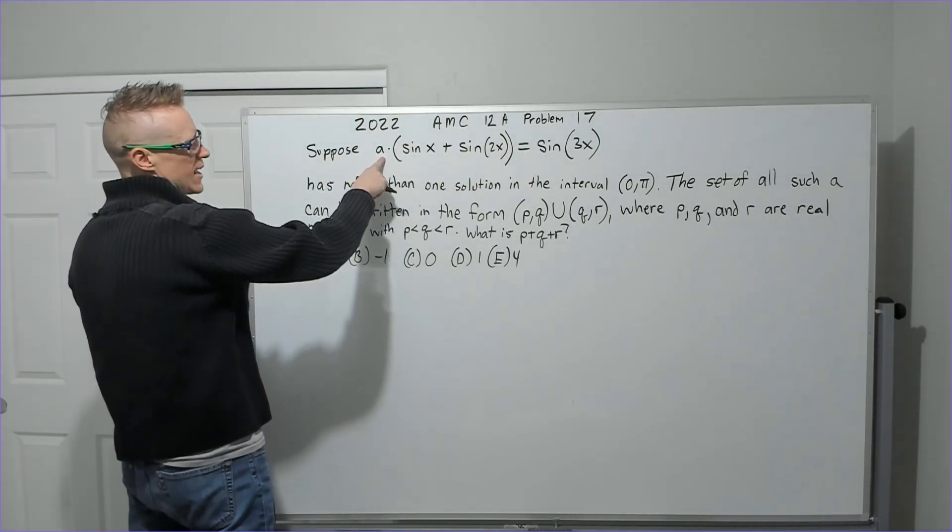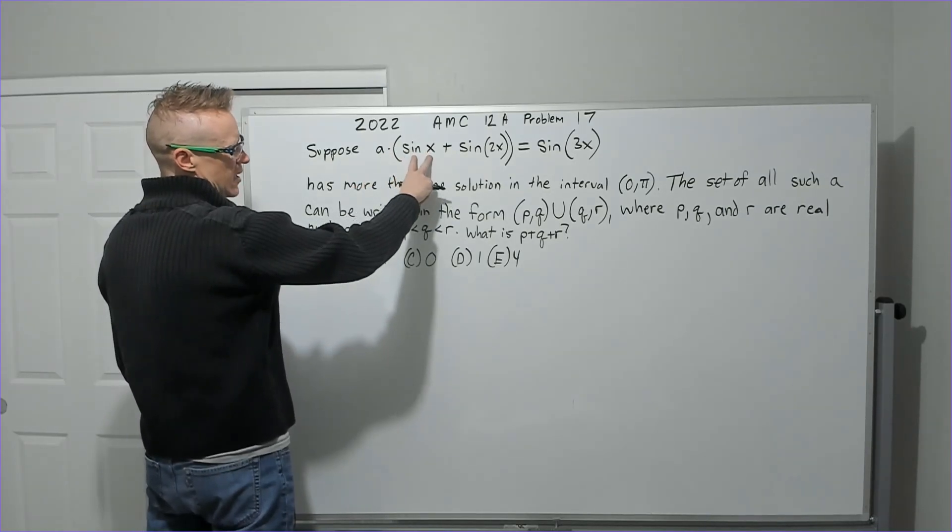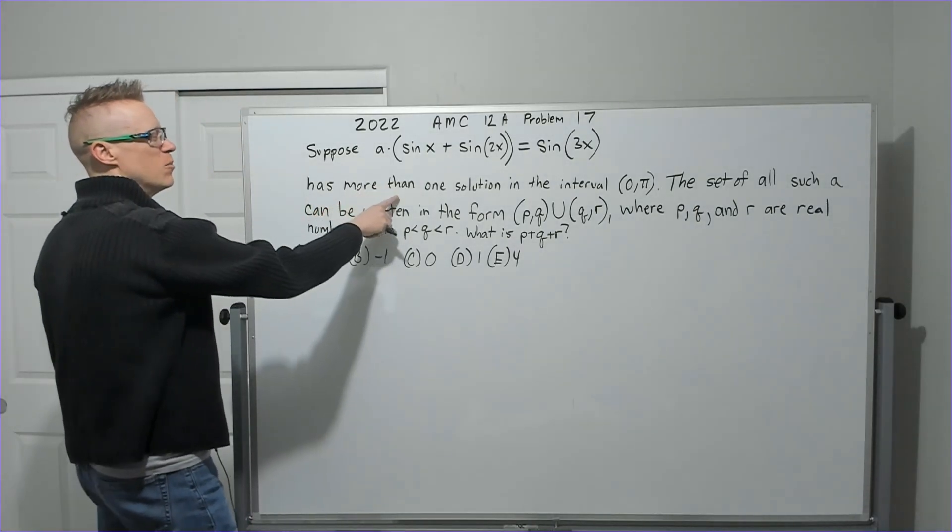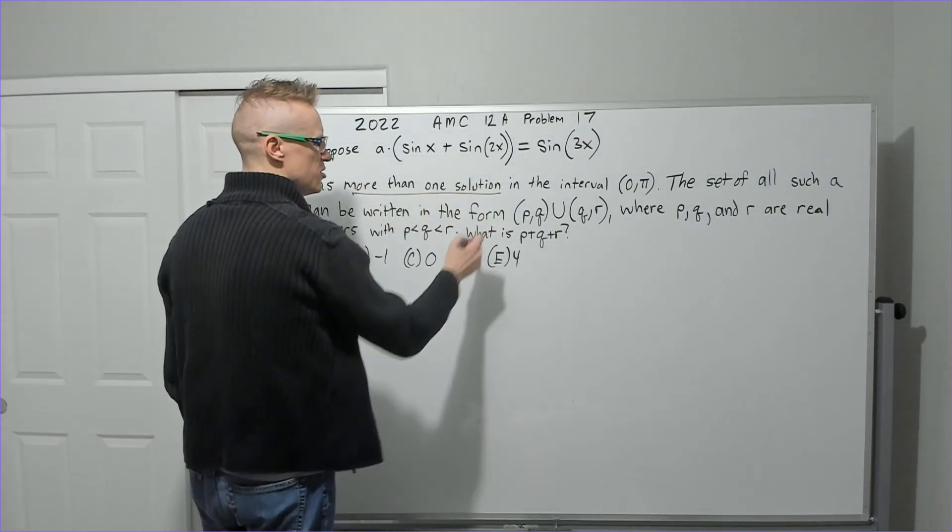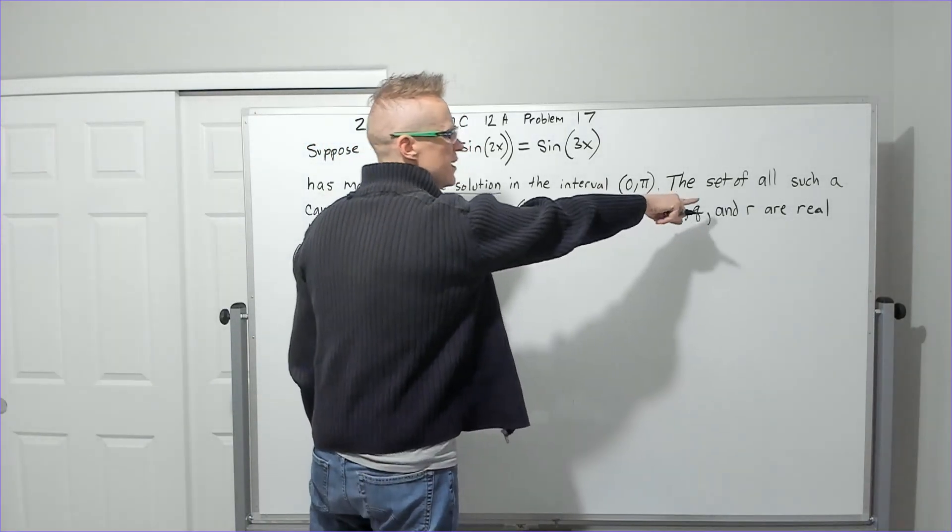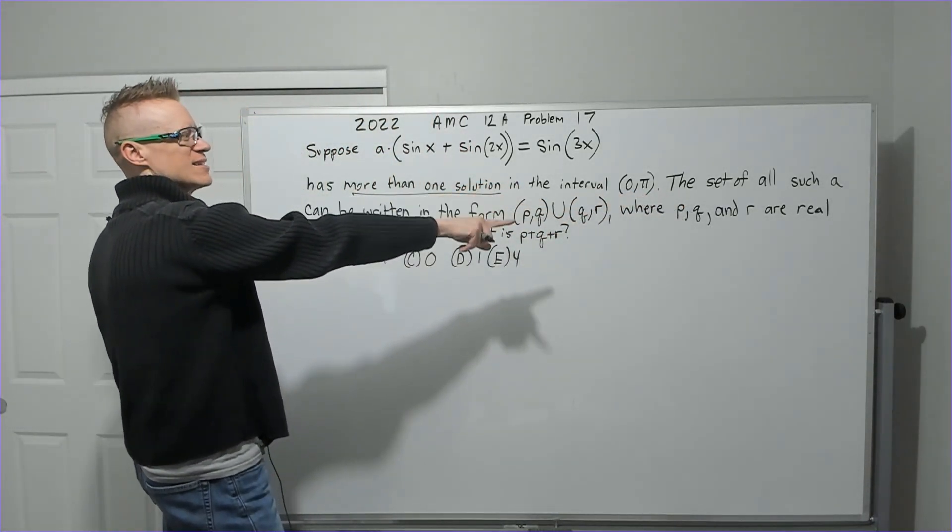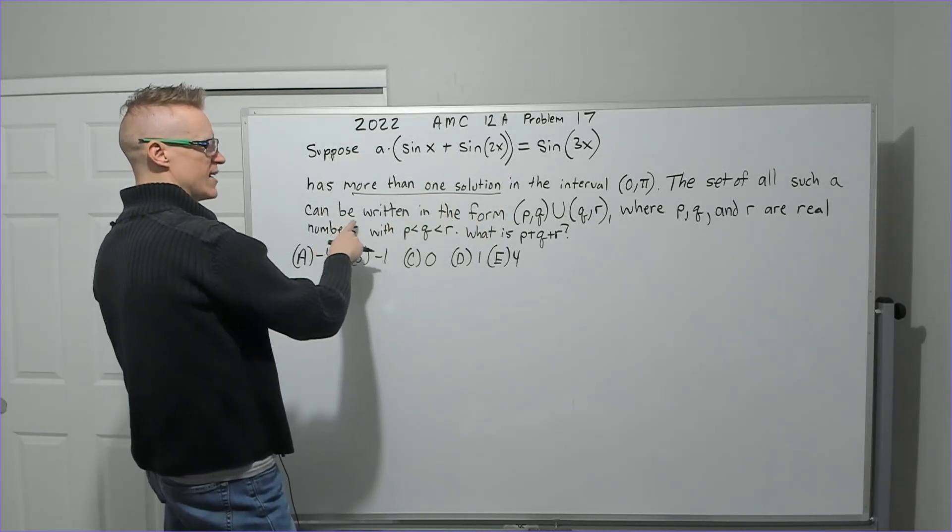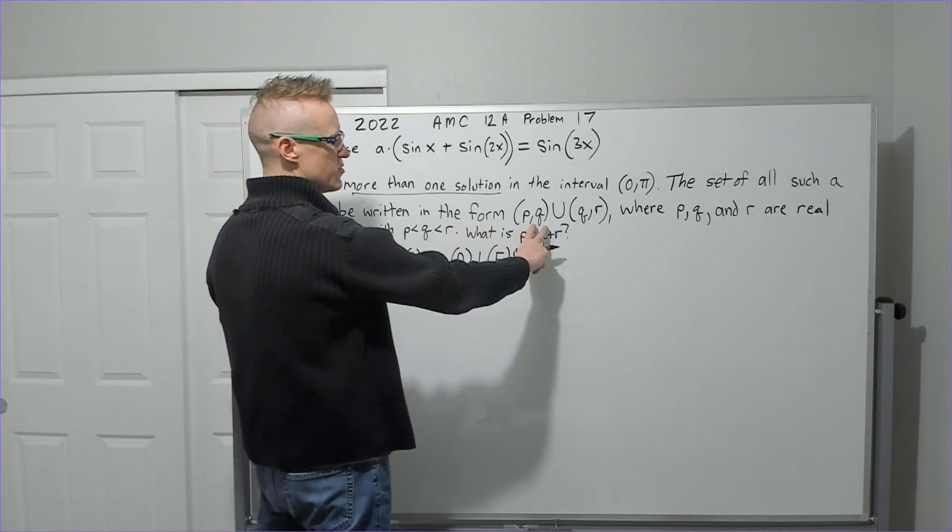Suppose A times sine of x plus sine of 2x equals sine of 3x has more than one solution in the interval zero to pi, not inclusive. The set of all such A, where that happens, more than one solution, can be written in this form,